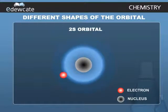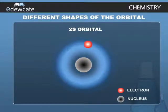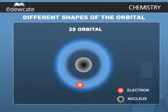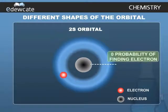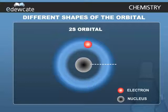On the other hand, for 2s orbital, the probability density first decreases sharply to zero and again starts increasing. After reaching a small maxima, it decreases again and approaches zero as the value of r increases further.